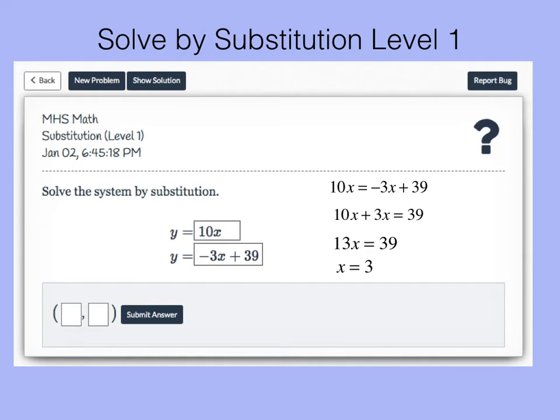So that is the x coordinate of the solution. If I were to graph these two lines they would intersect at a point and the x coordinate of that point is 3. Now to get the y coordinate of that point I can substitute this value of x into either equation.